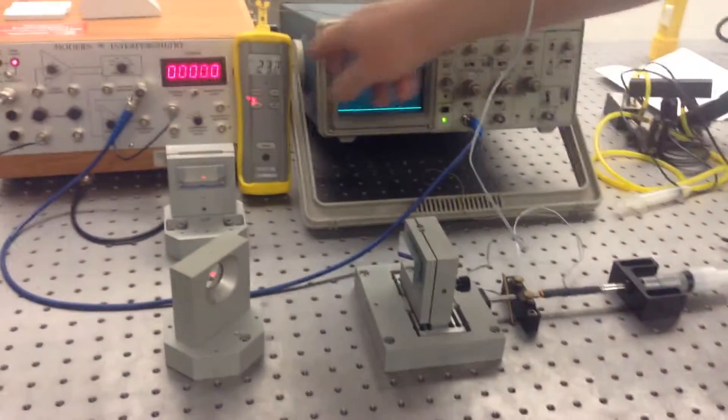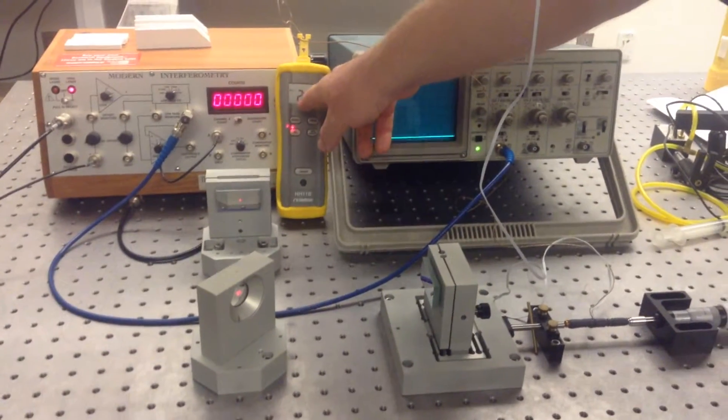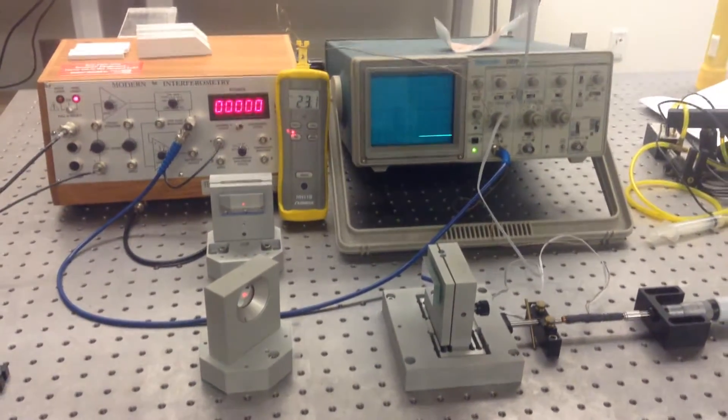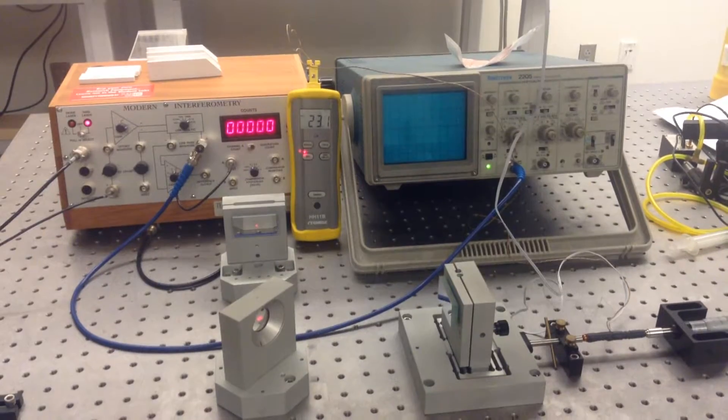As the bar expands, the temperature goes up. As the temperature goes up, the bar expands and we'll get fringes. So I'm going to turn on the power. Now the power is on.